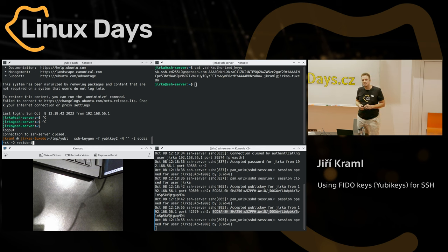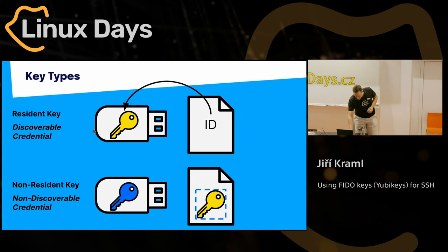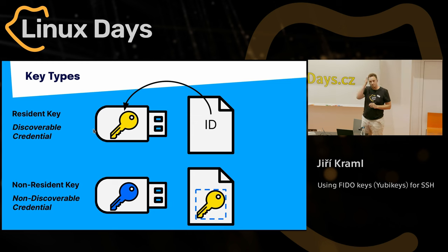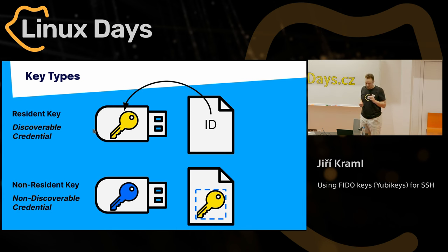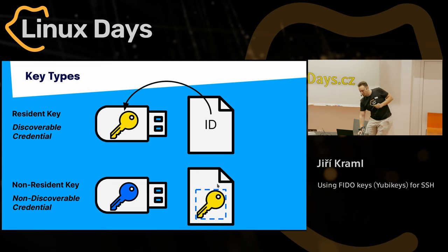I want to ask about non-discoverable keys. With a resident key, you can pull it from the key's memory, but if I have the non-resident key and I lose the files on my computer, could I generate a new one from the same key and use it with the servers? No — the idea generally is that exactly this should not work because they should be bound to this physical device. If you have this non-resident key and you lose the file, then the private key is lost — that's it, you have to create a new one.